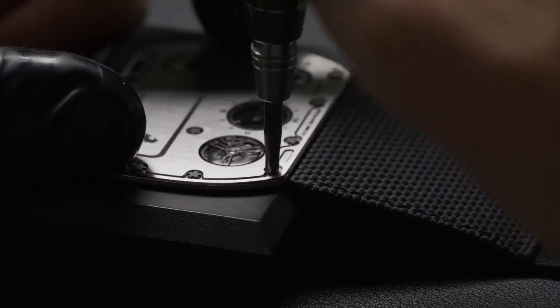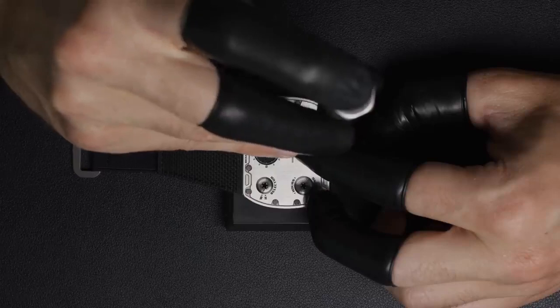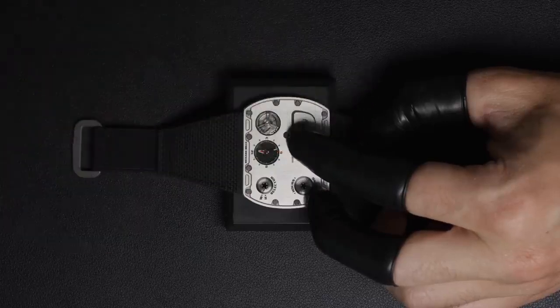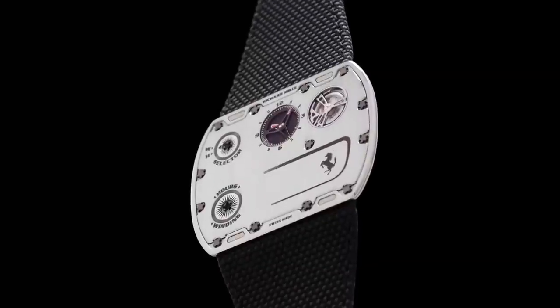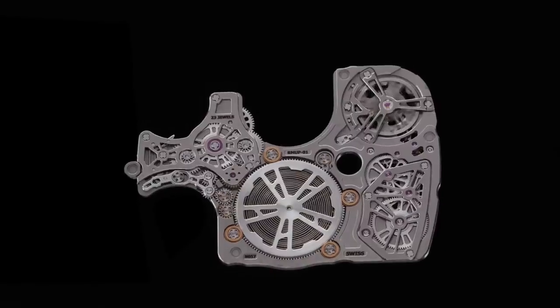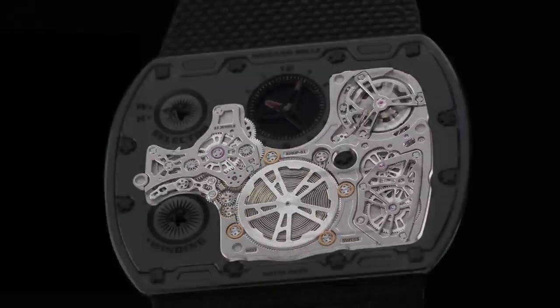The RMUP01 Ferrari has successfully respected all the Richard Mille principles of manufacture, thanks to its extreme lightness, its tonneau shape, spline screws, skeletonised movement, and an incredible level of finishing.